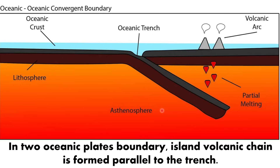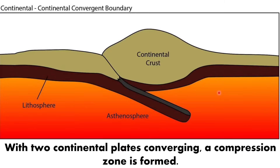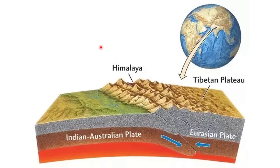In a two oceanic plates boundary, an island volcanic chain is formed parallel to the trench. Both the oceanic-continental and oceanic-oceanic plate boundaries have volcanic activity because the descending plate melts and causes magma to rise. On the other hand, two continental plates converging results in the formation of a compression zone. An example of this is the Himalayas, where the Indian plate is colliding with the Eurasian plate.